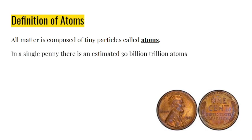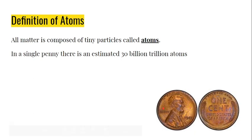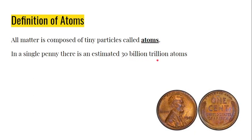In a single penny there's an estimated 30 billion trillion atoms. Holy cow, that is a lot of atoms. Just for an idea of how many atoms that is, that is 30 followed by 22 zeros. That is a lot of atoms just found in one of these small pennies. You could probably go around your house right now and find a penny, and if you were able to break it down into its atoms, you would actually get 30 billion trillion atoms. That is crazy to think about — that's just how tiny they are.